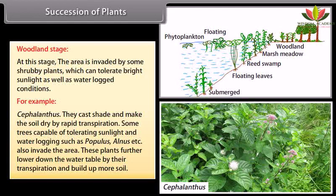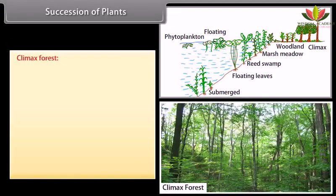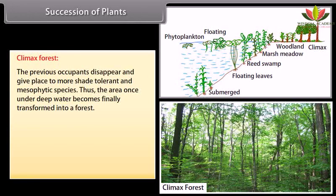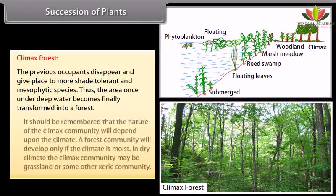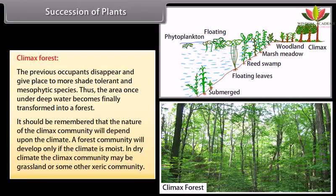Woodland stage: the area is invaded by shrubby plants tolerating bright sunlight and waterlogged conditions, for example Cephalanthus. They cast shade and make the soil dry by rapid transpiration. Trees capable of tolerating sunlight and waterlogging, such as Populus, Alnus, etc., also invade the area, further lowering the water table and building up more soil. Climax forest: the previous occupants disappear and are replaced by more shade-tolerant and mesophytic species. The area once under deep water becomes transformed into a forest, with the nature of the climax community depending upon the climate.